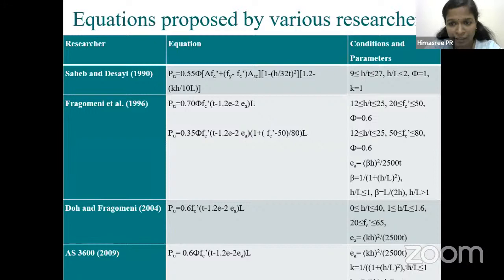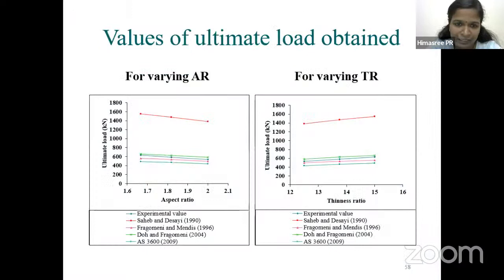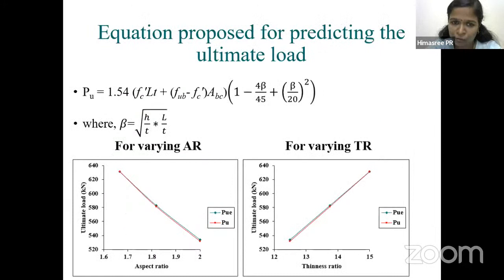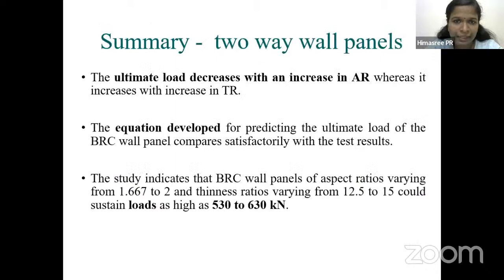Existing equations proposed for RCC two-way wall panels did not compare satisfactorily when bamboo values were substituted. Therefore, a new equation was developed for two-way wall panels, and it was found to compare satisfactorily with the test results.